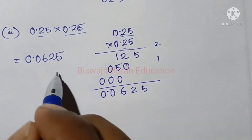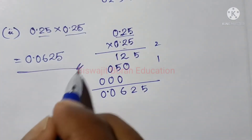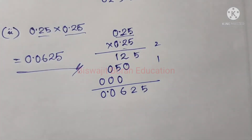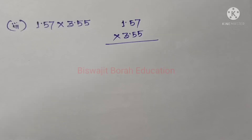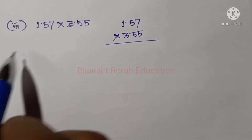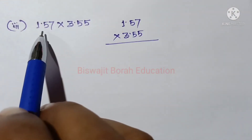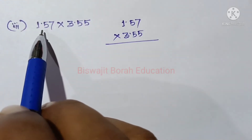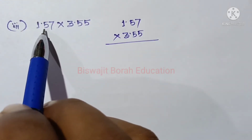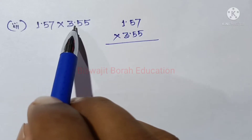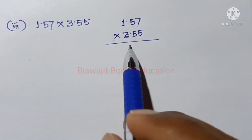A towards the number 1, 1.57 x 3.55 — this is the 4th top option.